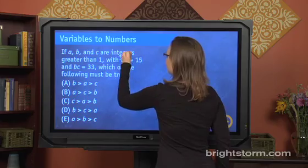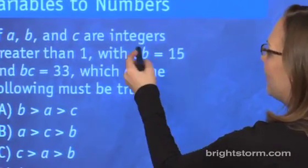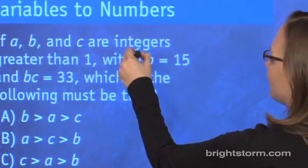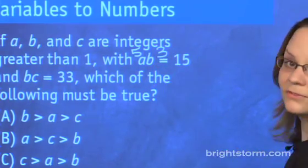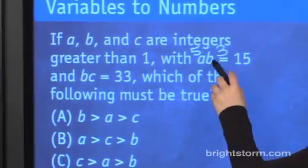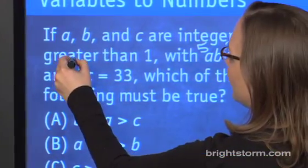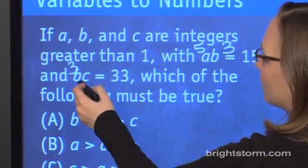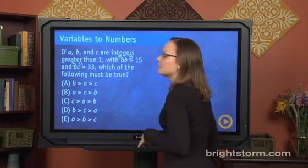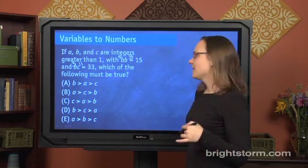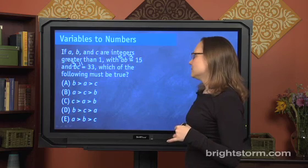So let's start over. Instead of 3 times 5, let's try 5 times 3. That'll fix our problem. We still have 5 times 3 is 15, so that's good. And yet now that b is 3, we're going to be able to make this statement true. 3 times what is 33? 3 times 11. So we fit all the restrictions on the problem, and we're ready to solve the question.